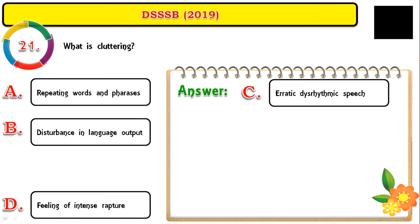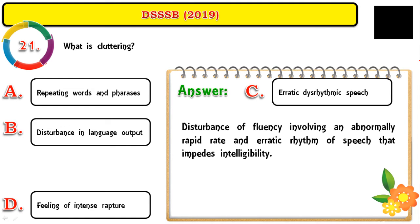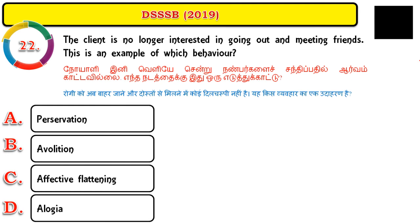Question number twenty-one: what is cluttering? The correct answer is erratic dysrhythmic speech — a disturbance of fluency involving an abnormally rapid rate and erratic rhythm of speech that impairs intelligibility. The person speaks too fast without regard for grammar.